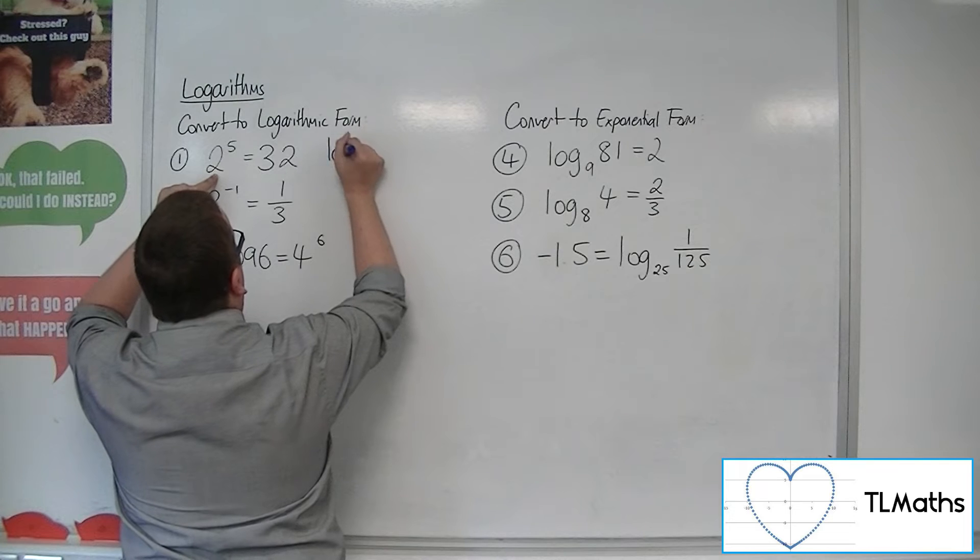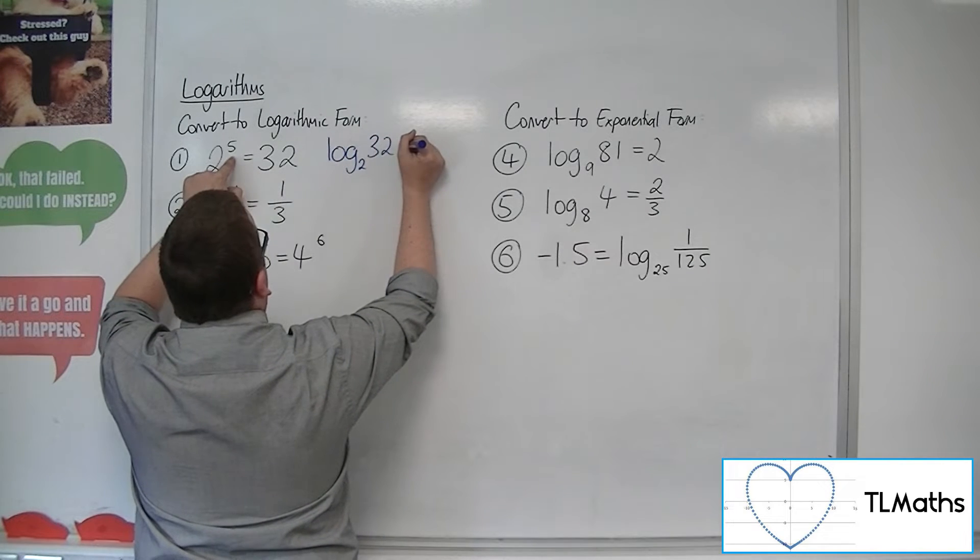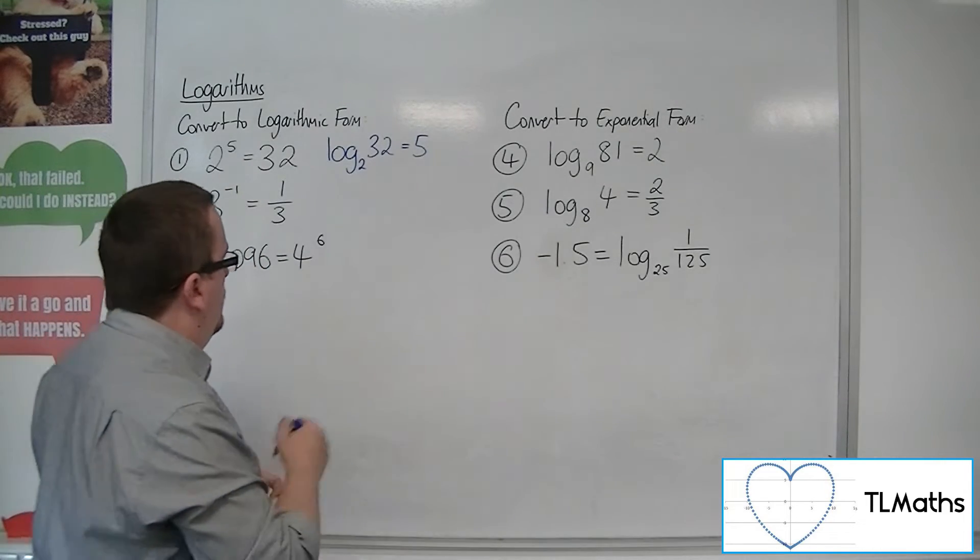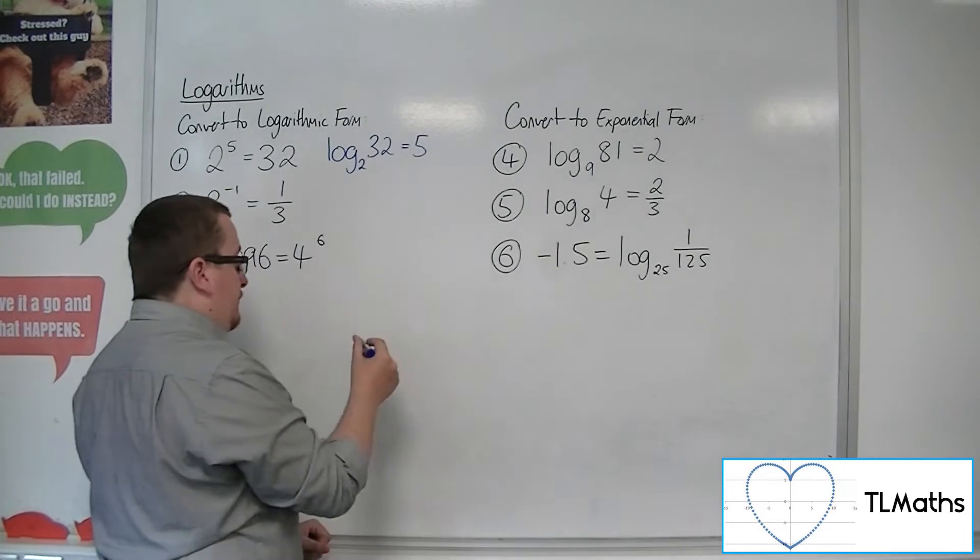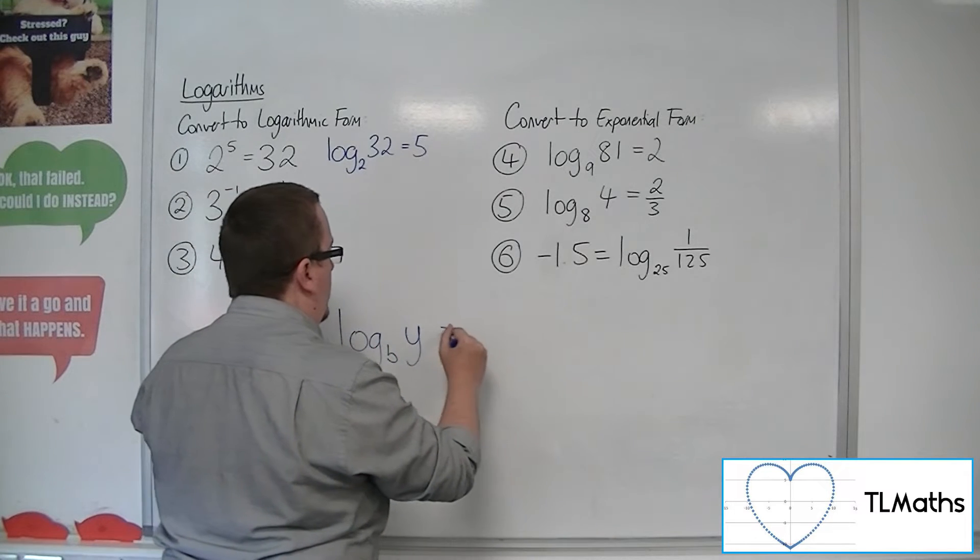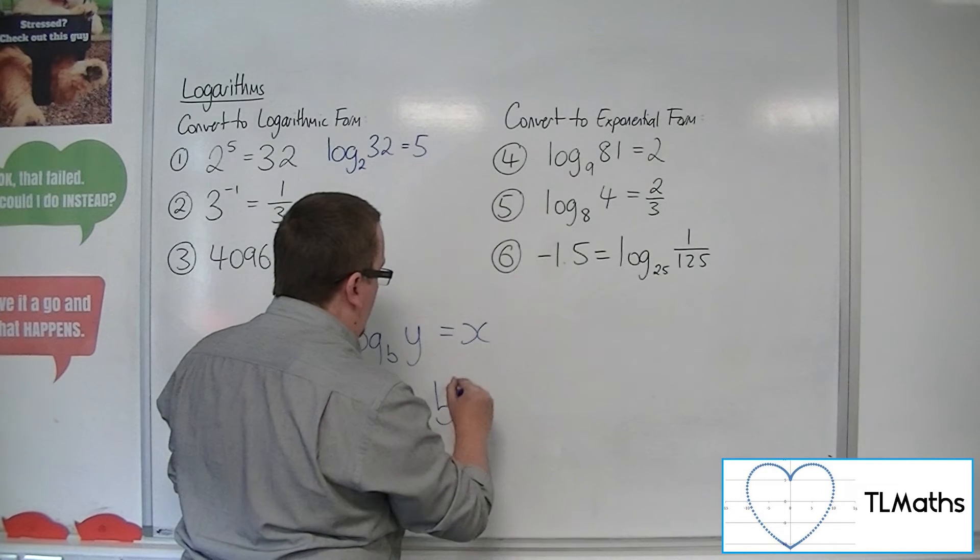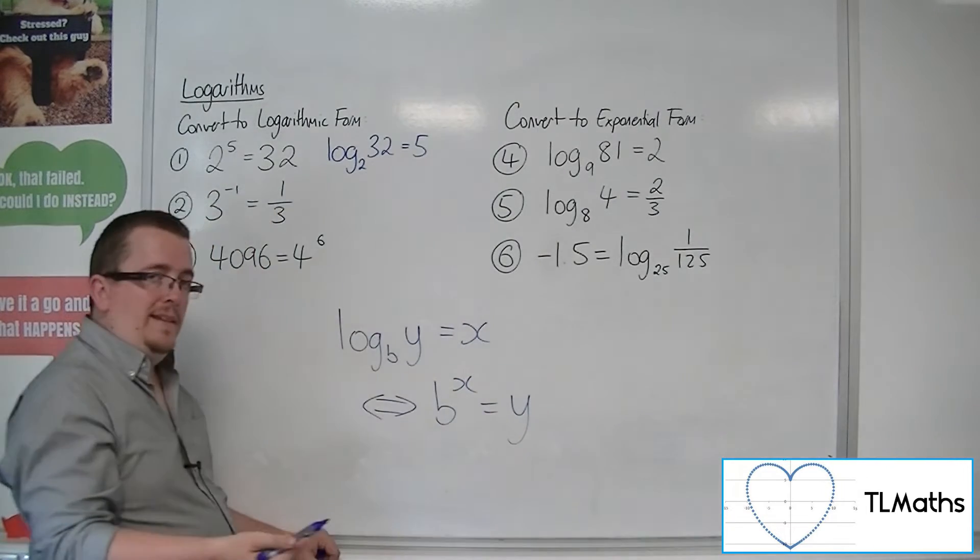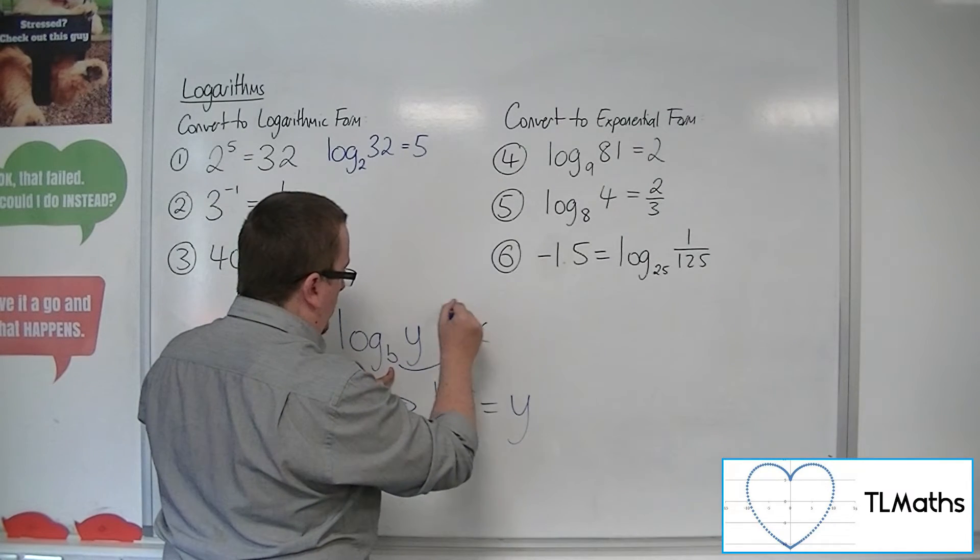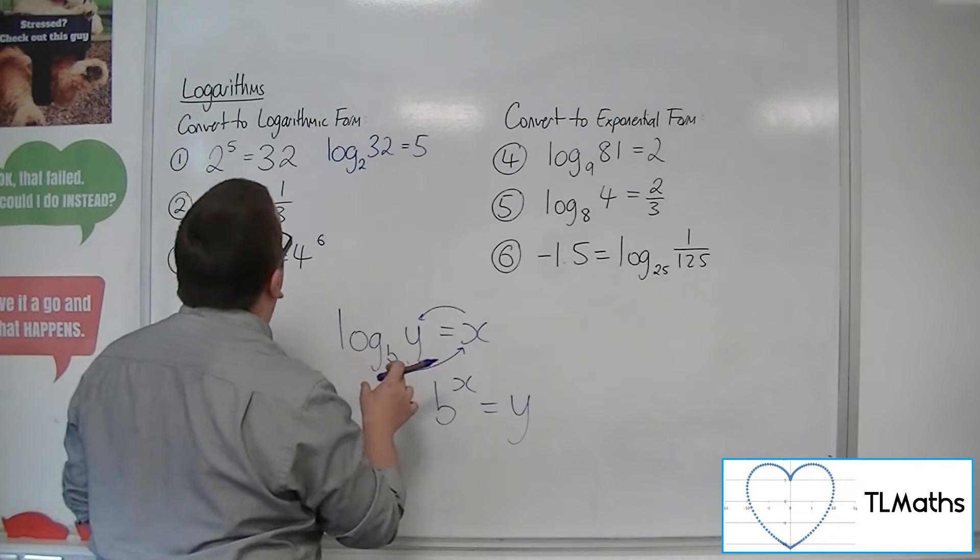So we can say that log base 2 of 32 is equal to 5. Now what you need to visualize here as we're going through is that log base b of y is equal to x converts to b to the x equals y, or y equals b to the x. b to the power of x is equal to y. That's the way around you need to visualize it.